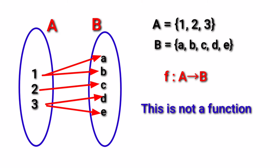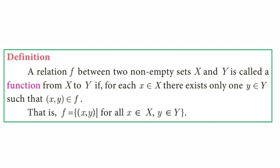To be a function, it is clearly understood that for every element in A there should be an image in B, and also there should not be more than one image in B. By definition, a relation F between two non-empty sets X and Y is called a function from X to Y if for each x belonging to X, there is only one y belonging to Y such that (x, y) belongs to F. It is clearly stated that there exists only one image in the second set Y.